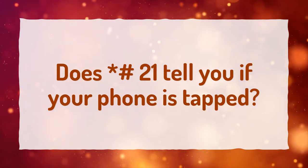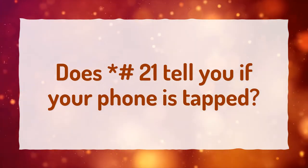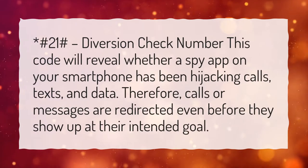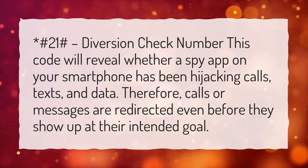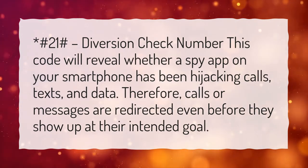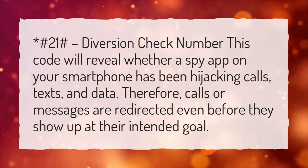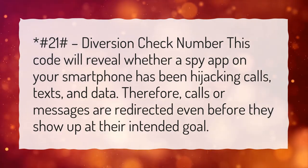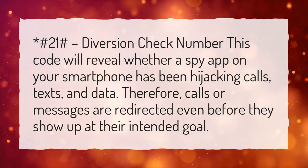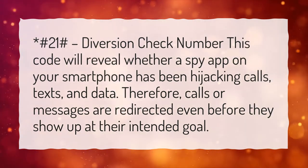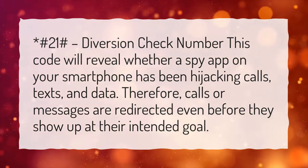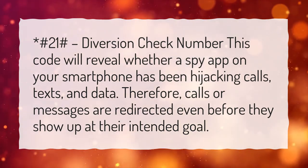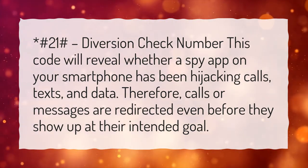Does asterisk hash 21 tell you if your phone is tapped? Asterisk hash 21 hash is a diversion check number. This code will reveal whether a spy app on your smartphone has been hijacking calls, texts, and data. Calls or messages are redirected even before they show up at their intended destination.